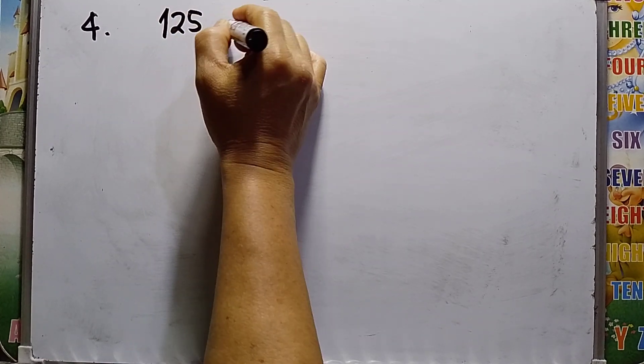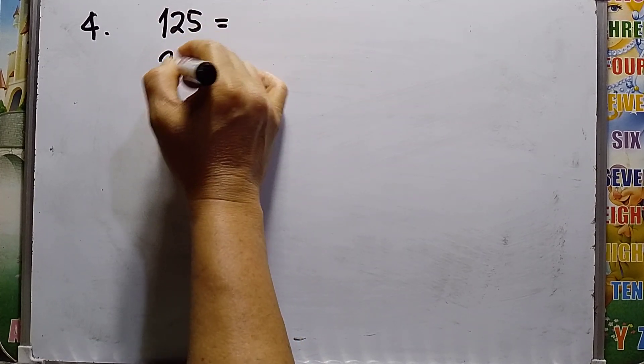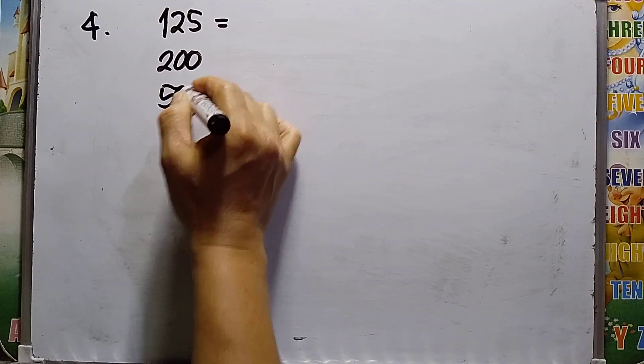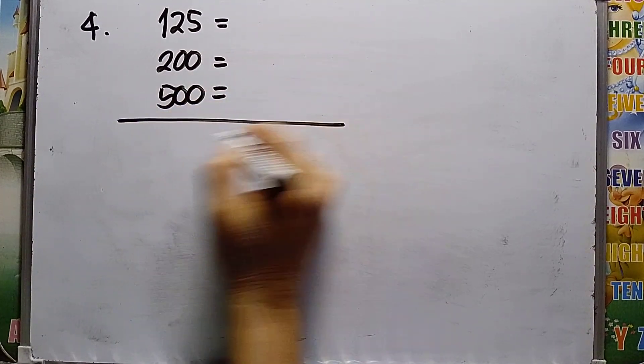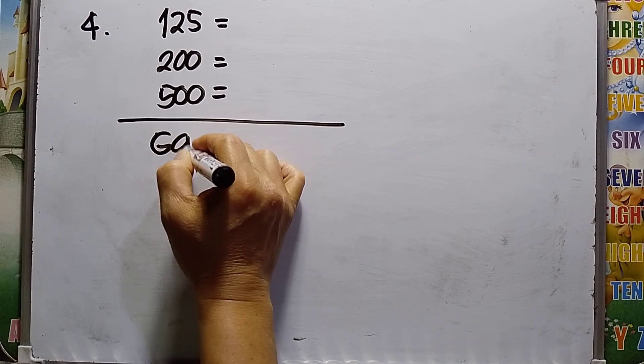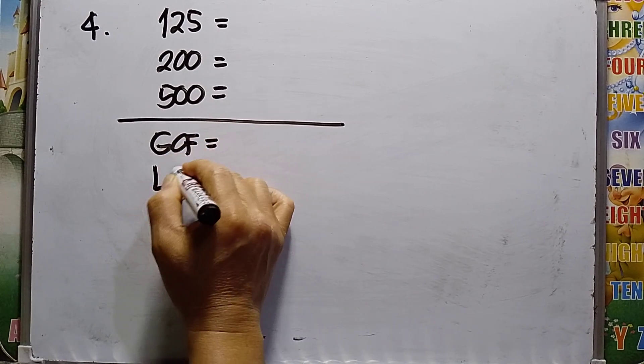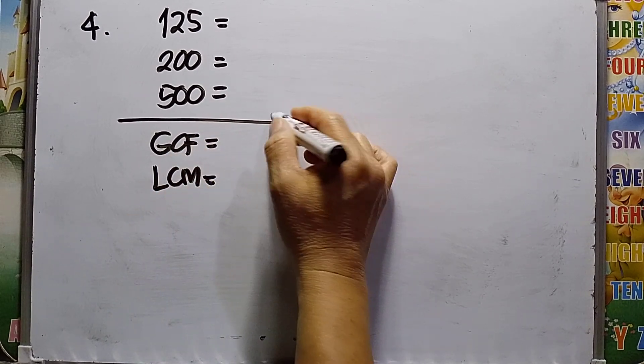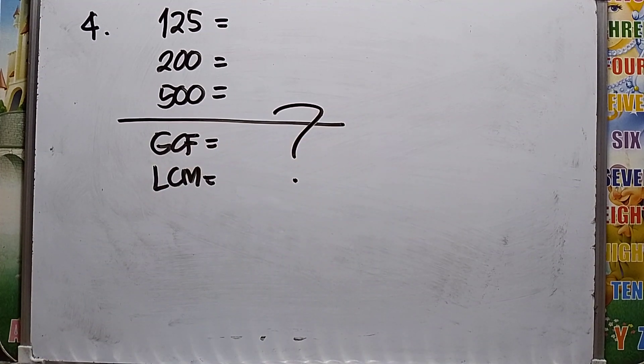125, 200, and 500. Find the GCF and LCM. This is your task. That's all.